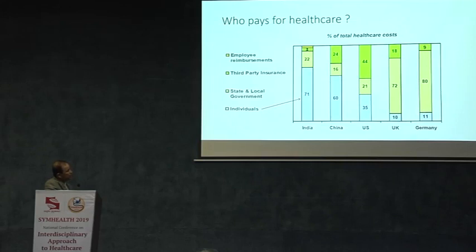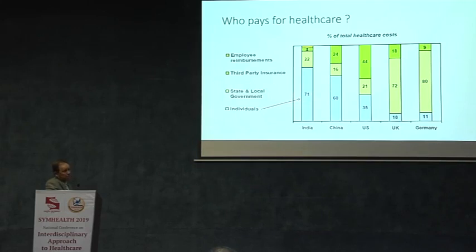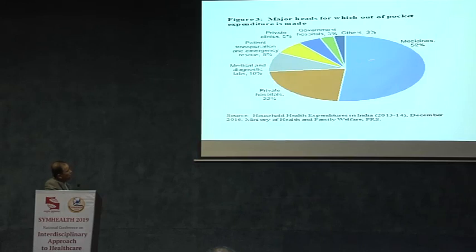Who pays for healthcare? In the UK, Germany, and most Western European countries, the government pays — the yellow bar is state and local government. As you move to the US, it's more balanced: government insurance, private insurance, and some individual. But in India, 71% — and some studies show even higher — of people pay out of pocket. This is obviously not good. We don't know what is exactly perfect, but you can't be such an outlier. We need to move in the right direction. Most of that out-of-pocket spending goes to medicines, hospitals, diagnostic labs, transportation, and government hospitals.